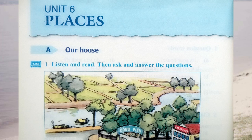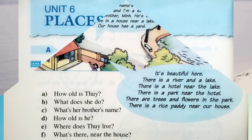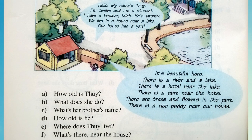Unit 6: Places. Section A: Our House. Exercise 1. Listen and read. Then ask and answer the questions.